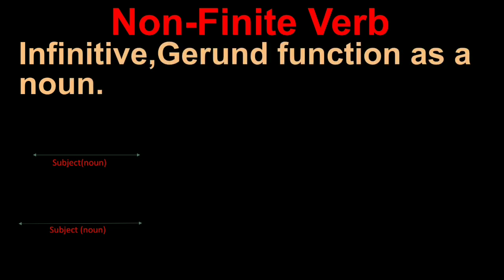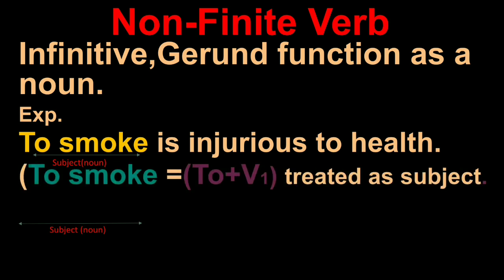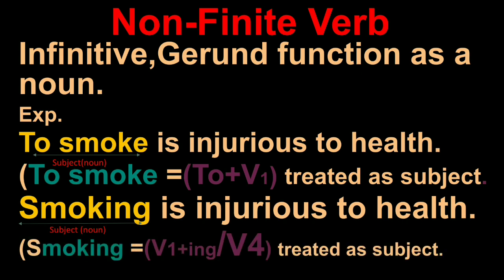Infinitive and gerund function as noun. See example one: 'To smoke is dangerous to health.' To smoke is the subject noun, configured as 'to' plus V1. 'Smoking is dangerous to health' - here smoking is V1 plus 'ing', treated as subject noun, but it is gerund. So smoking is gerund, to smoke is infinitive.